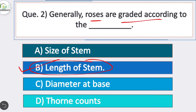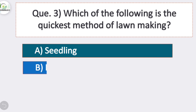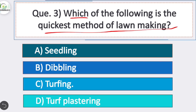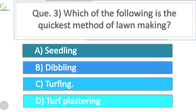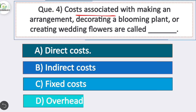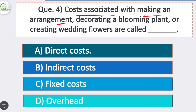Question 3: Which of the following is the quickest method of lawn making? Option C is correct — turfing. Turfing is the quickest method of lawn making. Question 4: Costs associated with making an arrangement, decorating a blooming plant, or creating wedding flowers are called — option A is correct — direct cost.